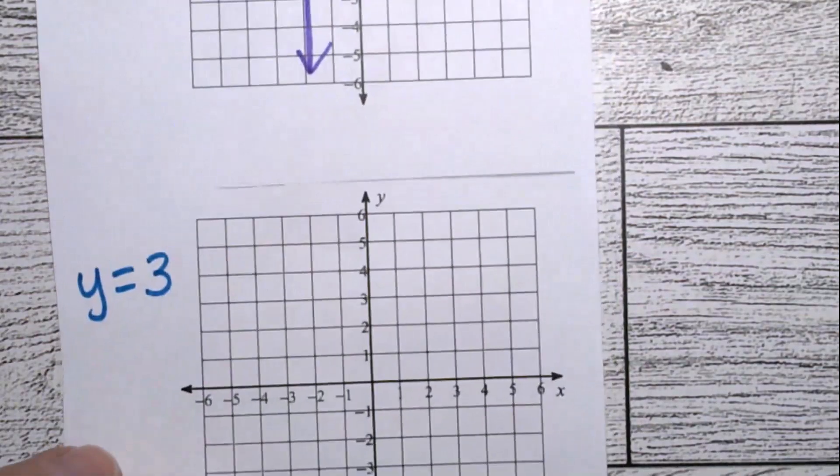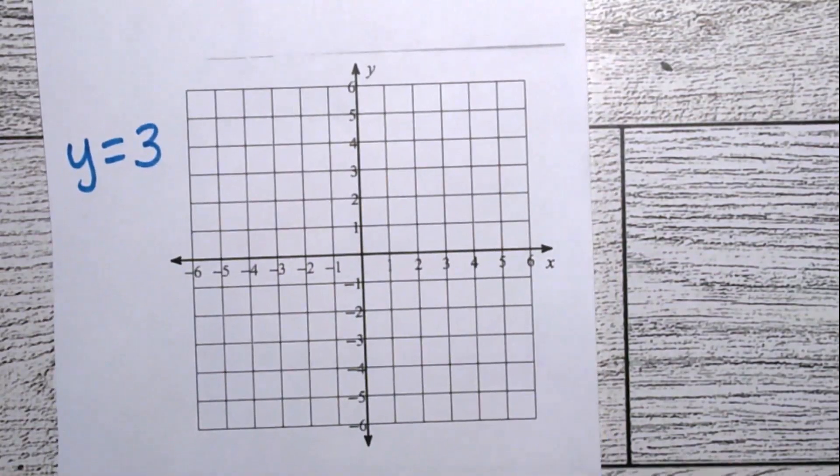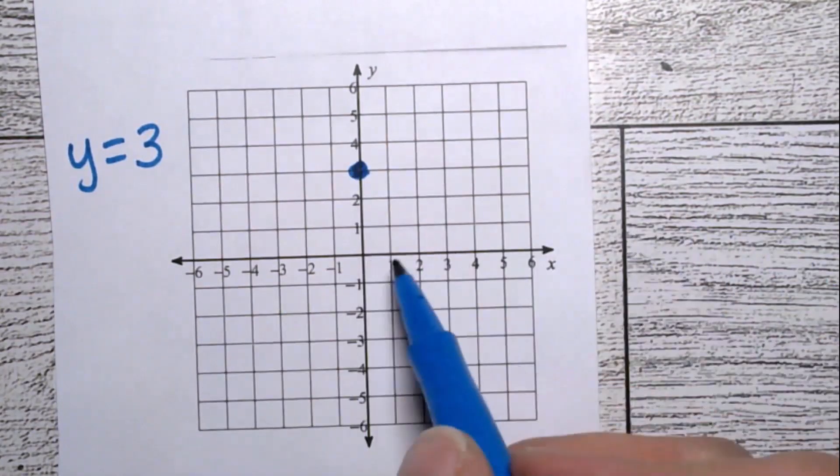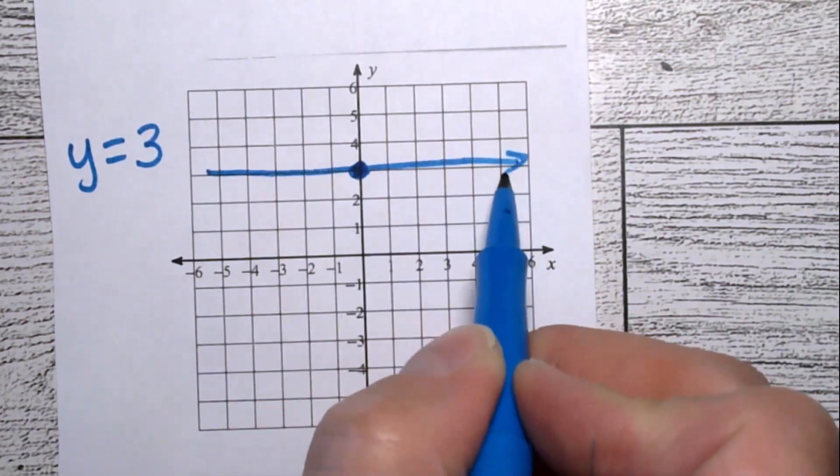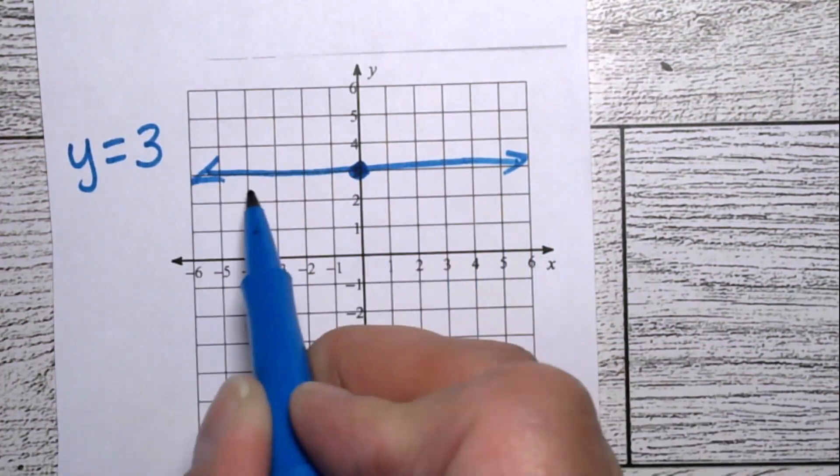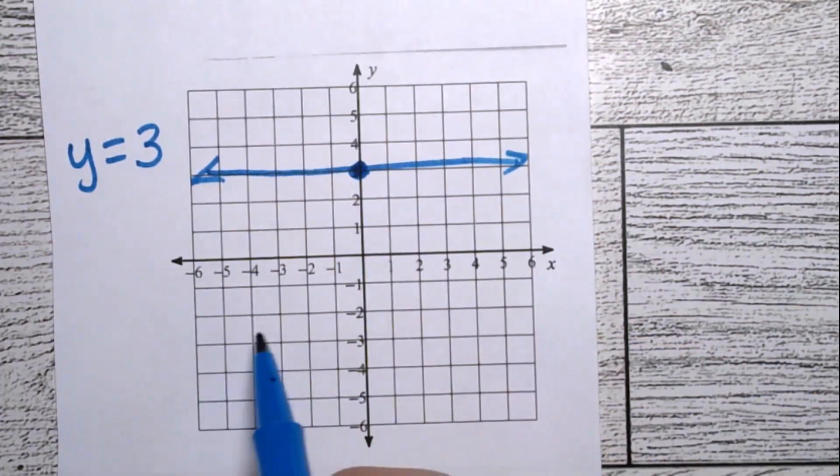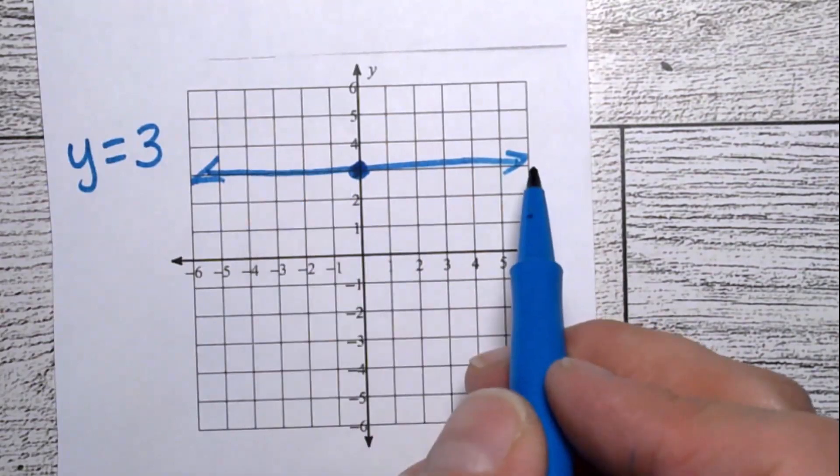y equals 3. The line y equals 3. It does go through the point. That's the y-intercept. But the line is a horizontal line. All the x's are going to be 3 anywhere you pick along here. But the x's will change. Did I just say that backwards? All the y's are going to be 3. And the x's are going to change.